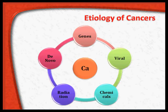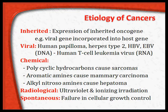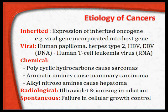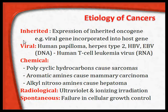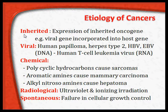Let us look at some examples of each one of these mechanisms. The inherited expression of an inherited oncogene — for example, a viral gene incorporated into the host genome forms an oncogene, and that is inherited through generations into the next generation, causing those individuals to suffer from tumours.